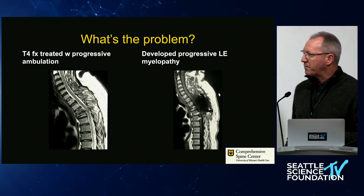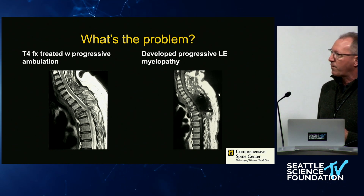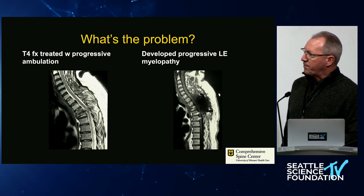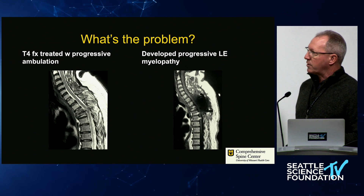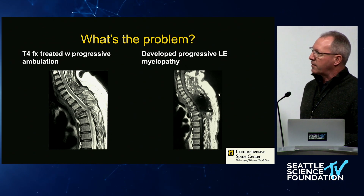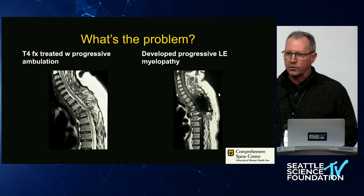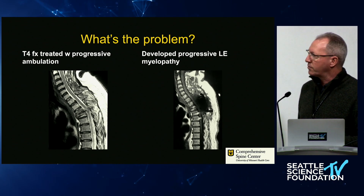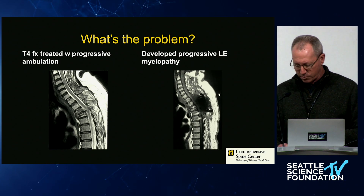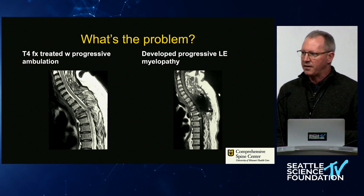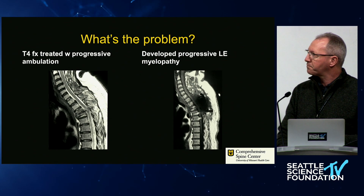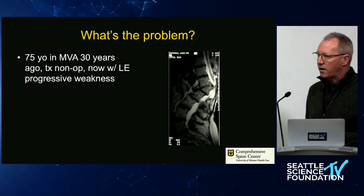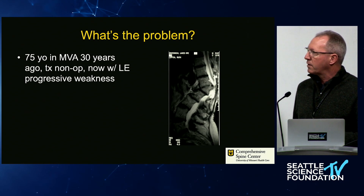Here's another aspect of the problem: a patient with a T4 fracture that was an insufficiency fracture, treated with just progressive ambulation. The problem was that she developed progressive lower extremity myelopathy, and as you can see on the right side, had to go on to decompressive and stabilization surgery. Could we have predicted that this was going to be the outcome for her?